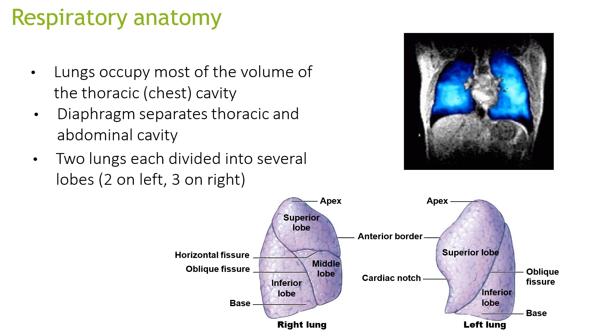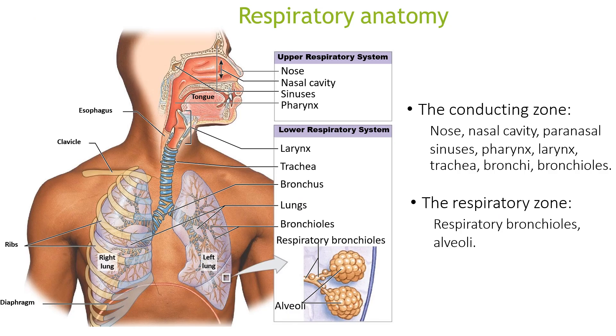The thoracic and abdominal cavities are separated by the diaphragm. There are two lungs, each divided into several lobes — two on the left-hand side and three on the right-hand side.